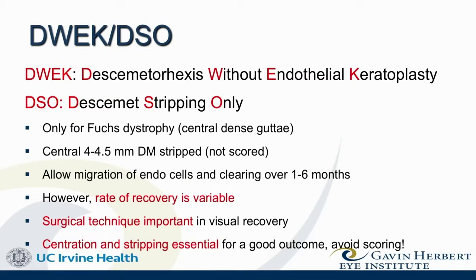What about DWEK — Descemet's stripping without endothelial keratoplasty, or Descemet's stripping only? This is good for a subset of Fuchs patients where the dense gutae are central. A four to four-and-a-half millimeter area of Descemet's membrane is stripped centrally and not scored, allowing for migration of endothelial cells. Clearance can take one to six months, and the rate of visual recovery is variable. We're looking forward to seeing how this plays a role in a subset of patients with central gutae.